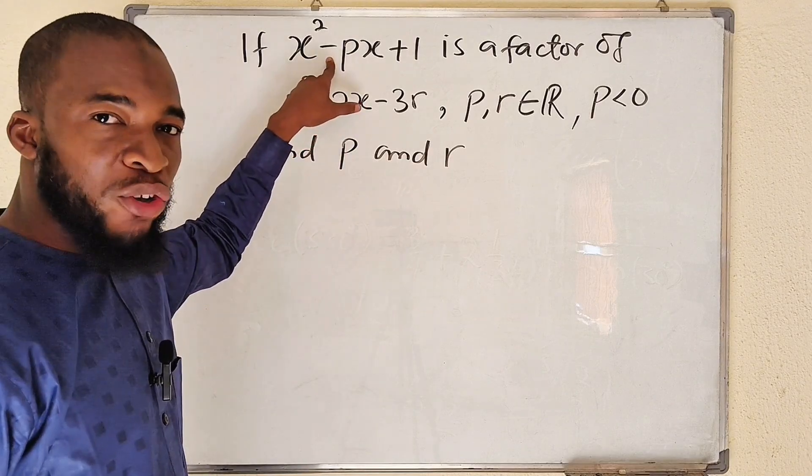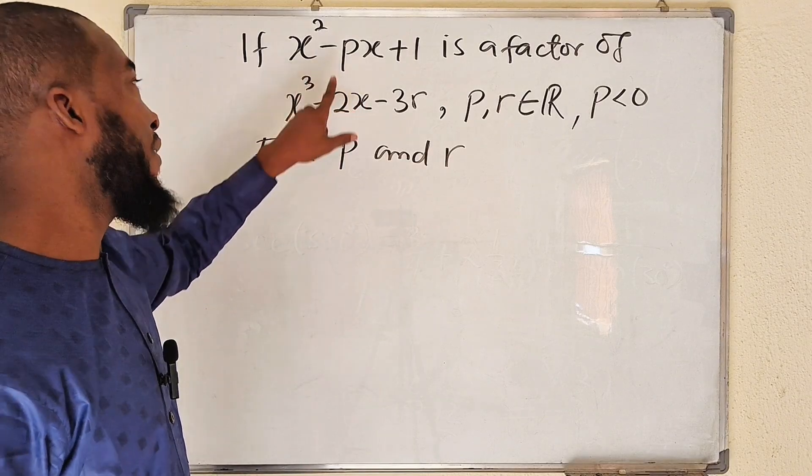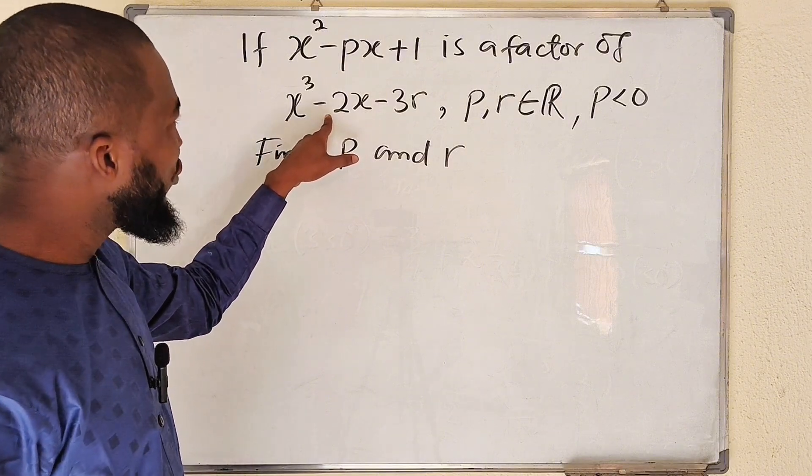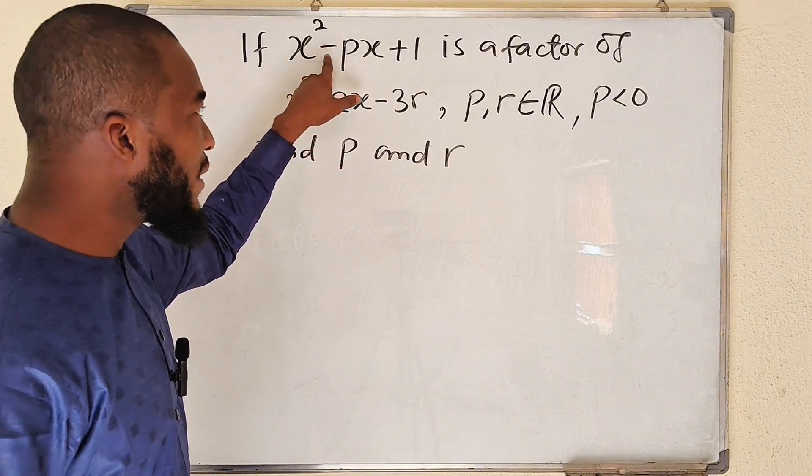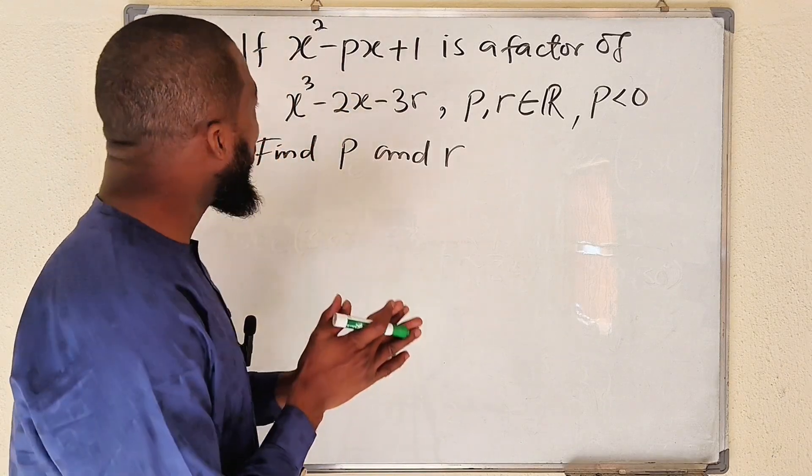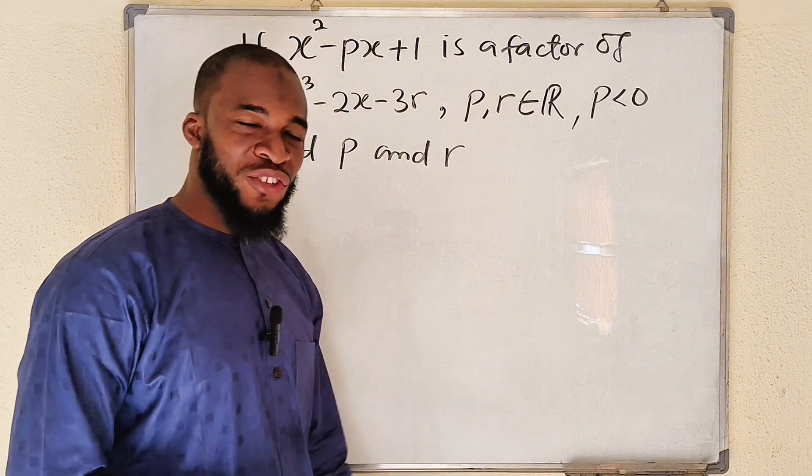This is a quadratic function which is a factor of this cubic function. So it means if we should multiply this quadratic function by a linear function, we shall obtain this cubic function.